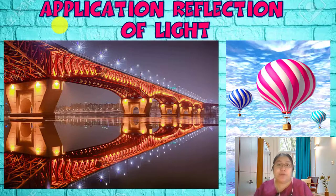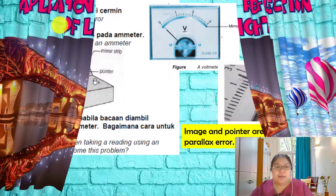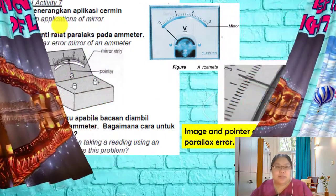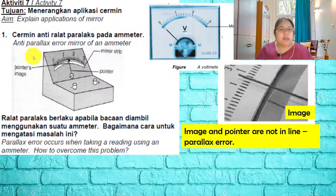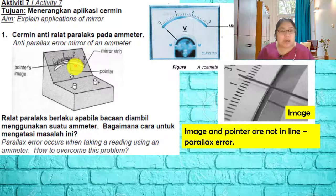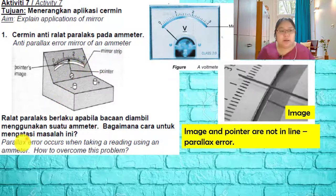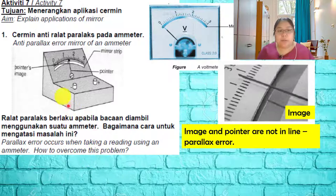The first question is related to the reflection about the ammeter. This is an anti-parallax error mirror on an ammeter — it has a mirror below the scale. Parallax error occurs when you take the reading using an ammeter, and to overcome it, we place a mirror beneath the scale.